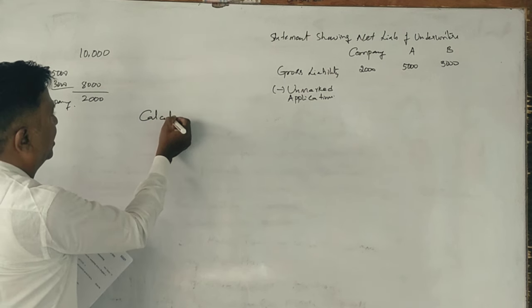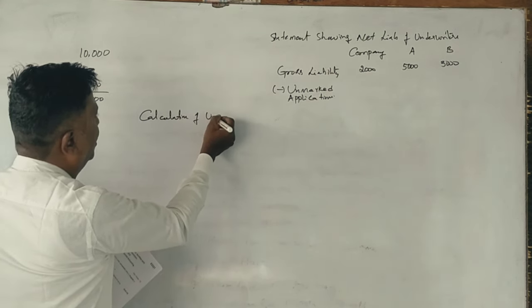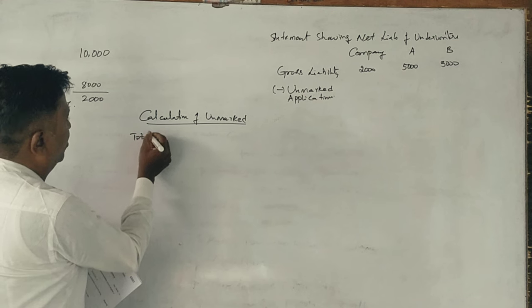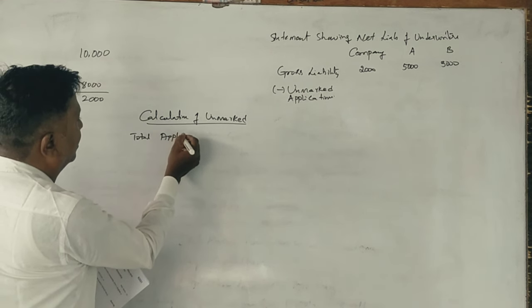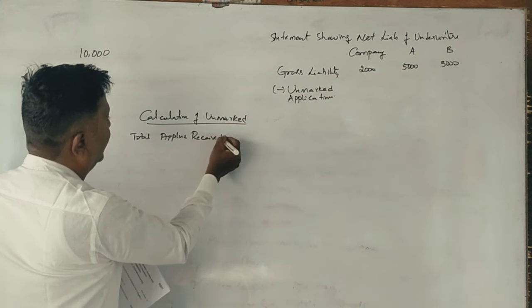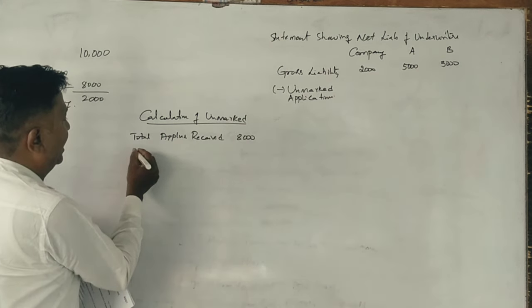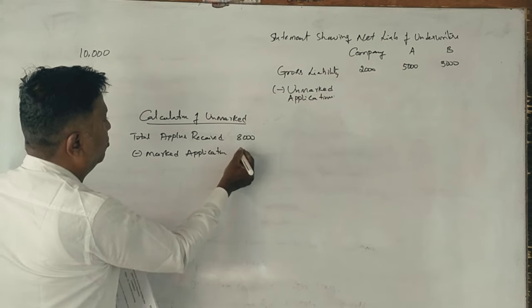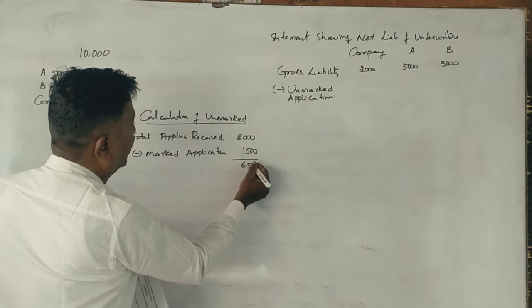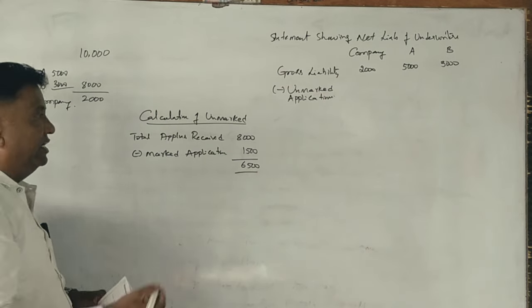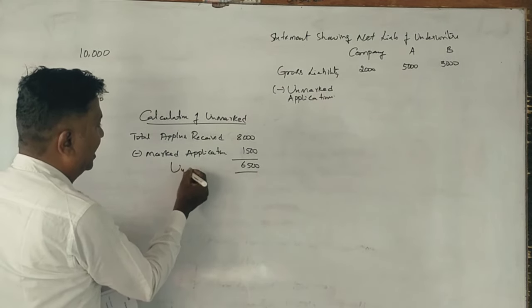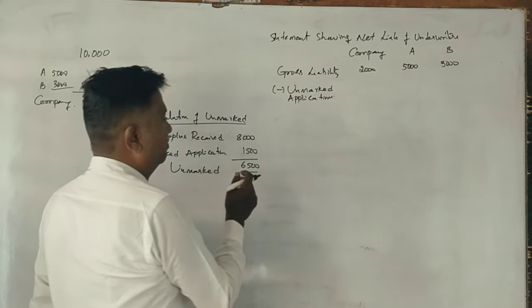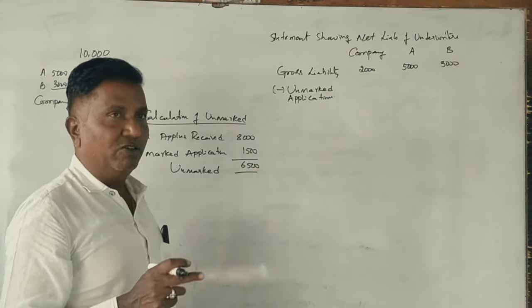Now, calculation of unmarked applications. Total applications received is 8,000 shares. Marked applications are 1,500 shares. So unmarked applications are 6,500 shares.